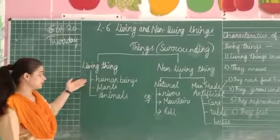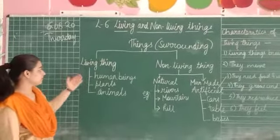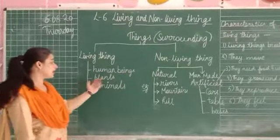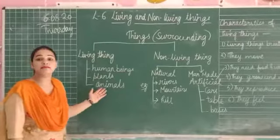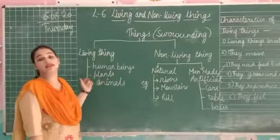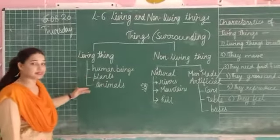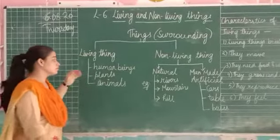Let's take some examples of living things: human beings, plants, animals, and birds. These are all living things.